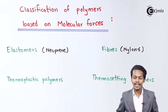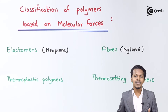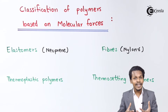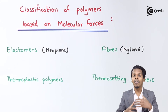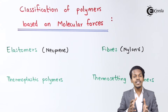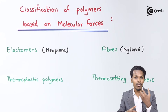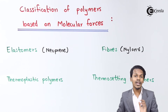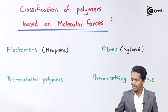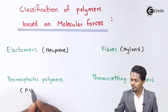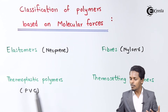Thermoplastic polymers are polymers which can be heated, reshaped, and which soften on heating and harden after cooling. They can change their shape depending on pressure and temperature. Such polymers are known as thermoplastic polymers. An example is PVC — polyvinylchloride — which comes under the classification of thermoplastic polymers.